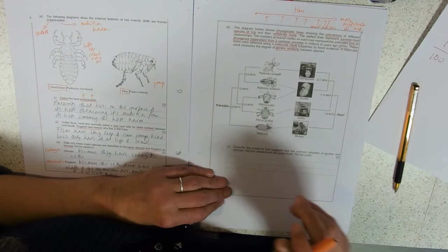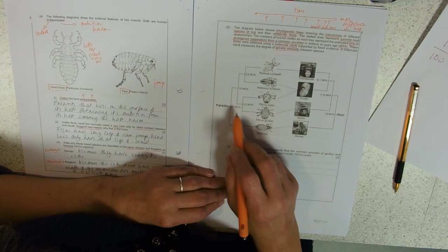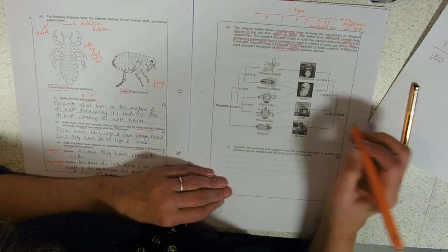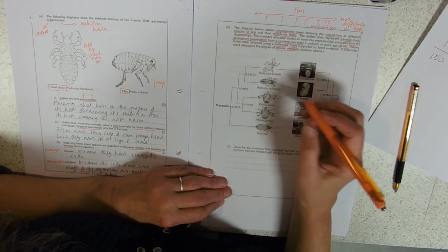So here we've got our parasites. 23 million years ago they set off, their common ancestor diverges. 10 million years goes past, they diverge again into this group, diverge into head lice and pubic lice. Then 5.6 million years ago, these head off into ones specialized for chimpanzees and ones specialized for humans, and these ones split into ones specialized for humans and ones specialized for gorillas.